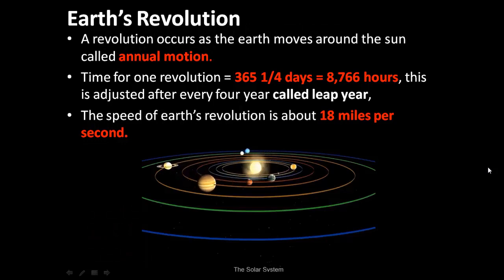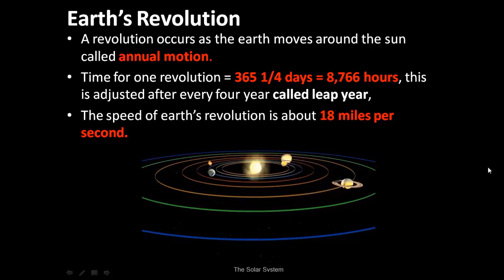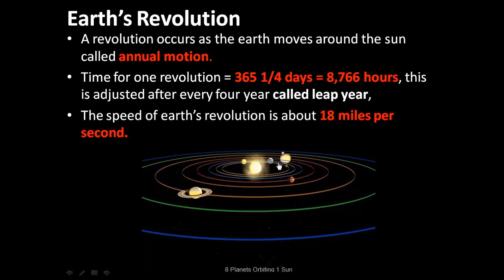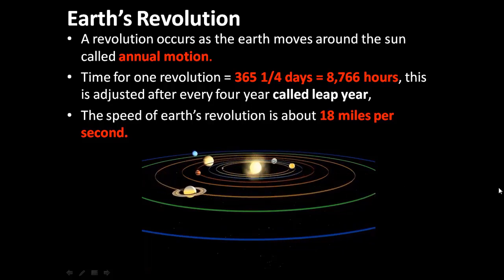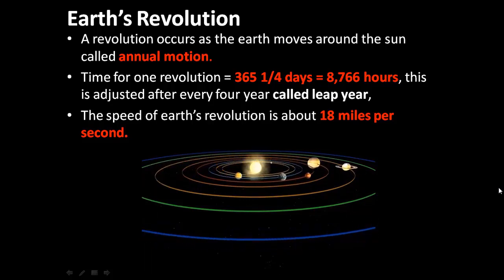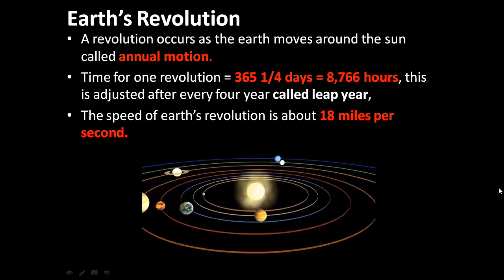Now we will understand what is earth revolution. A revolution occurs as the earth moves around the sun, called annual motion. As you can see in this animation, earth on its own orbit revolves about the sun on a particular path, and at the same time it is also rotating on its own axis. As you can see, all other planets are doing the same. Time of revolution is 365 and one-fourth days, that equals 8,766 hours. This is adjusted after every 4 years, called leap year. The speed of the earth's revolution is about 18 miles per second on its own orbit.